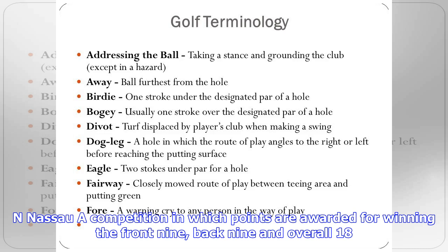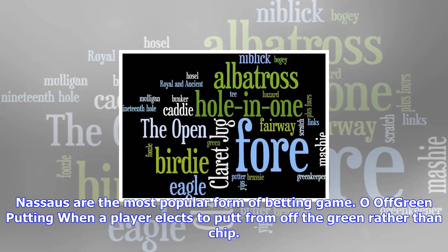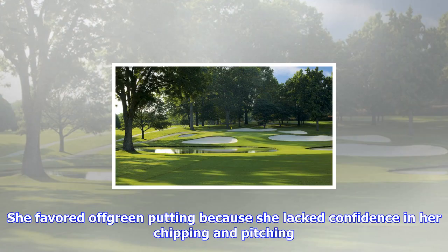Intended line of flight: the direction a player plans for his ball to begin after impact. Because she planned to hit a hook from the tee, her intended line of flight was at the right-hand fairway bunker.